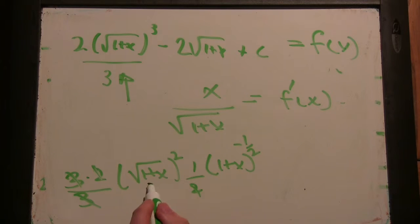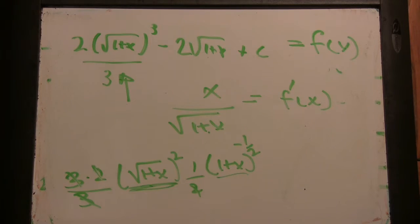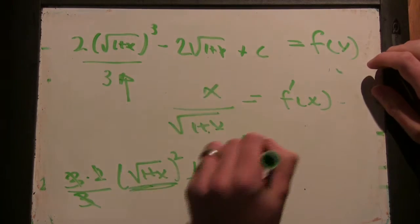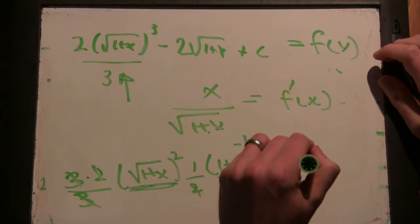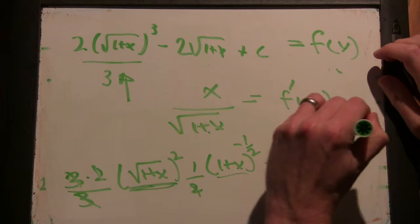Times the derivative of the inside which is 1 half 1 plus x to the minus 1 half. So that derivative is just 1 plus x squared over, so we get the square root that we want on the bottom. And then on this one, minus 2 times 1 half, 1 plus x to the minus one half.